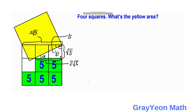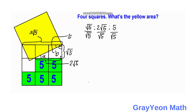Now we write the ratio of the white right triangle. The shorter leg is √5 and the longer leg is 2√5. Dividing both by √5, the simplified ratio is 1 : 2 : √5.